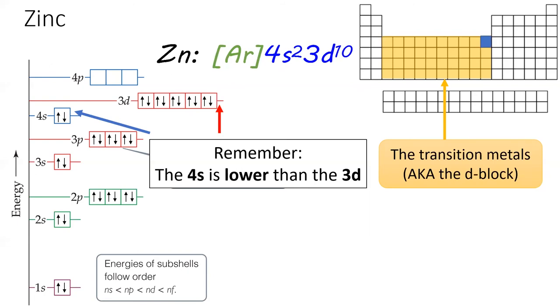The last transition metal of the fourth period is zinc. Zinc has a full 3d subshell, which means it doesn't behave very much like the other transition metals.